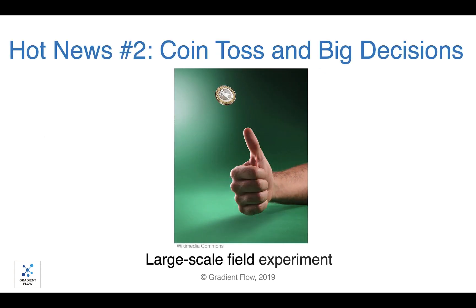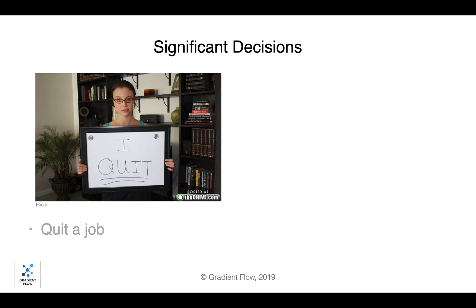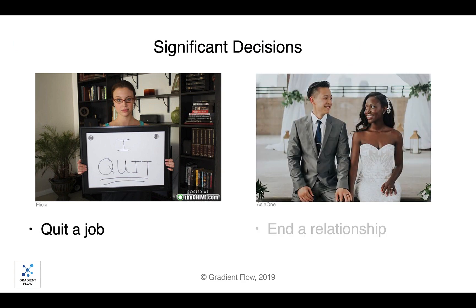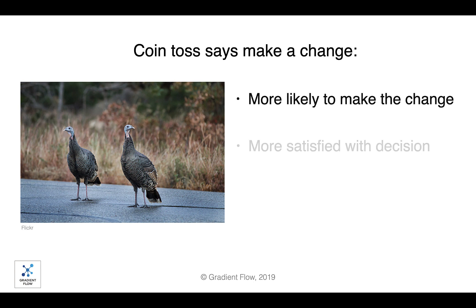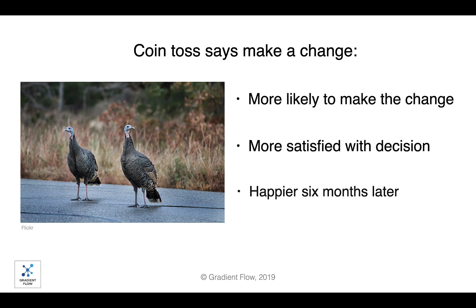Freakonomics author Stephen Levitt wrote about the results of a recent large-scale experiment in which subjects who were having difficulty making an important life decision flipped a coin to influence their choice. Decisions such as whether to quit a job or end a relationship were at stake. Participants who were told by the coin toss to make a change were more likely to make the change and more satisfied with their decisions.